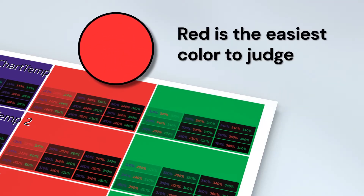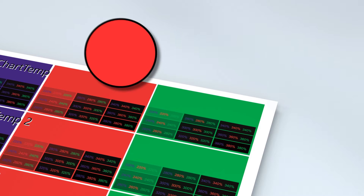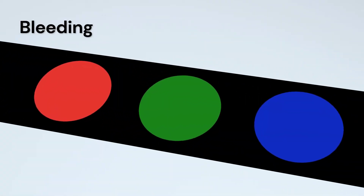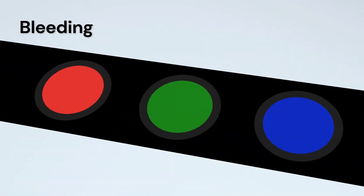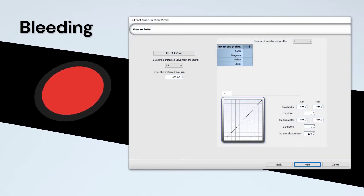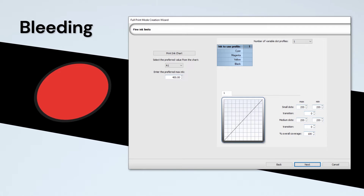Red is normally the easiest color to judge. With bleeding, process black spreading onto your secondary RGB colors is the most prevalent issue. This can be corrected by adjusting the levels of ink used in the printing process in the print mode creation.